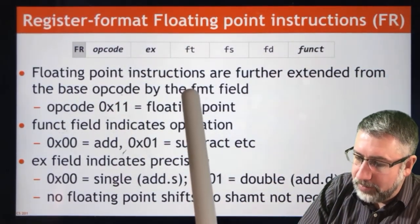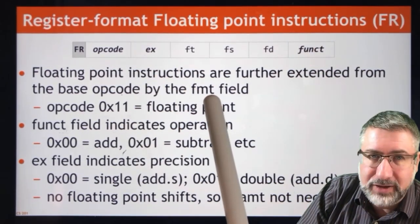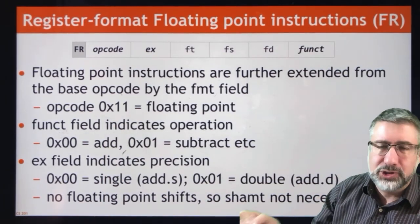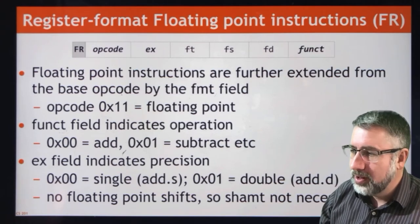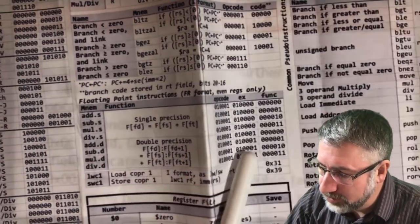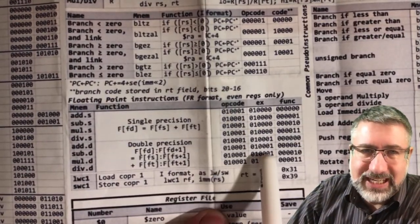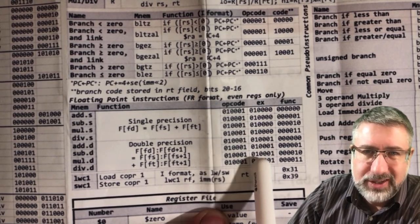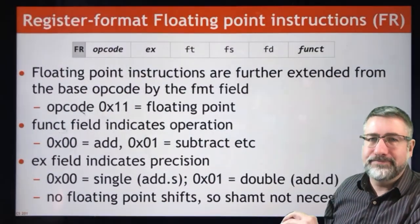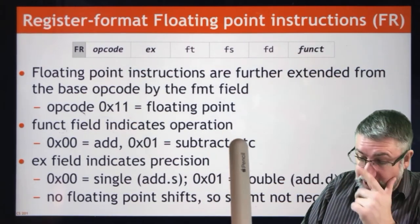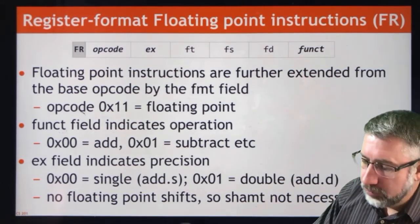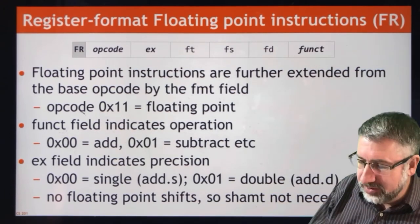The opcodes are further extended from the base opcode by what we call the EX field. The opcode for floating point numbers is 0x11 in hex, which is 010001 in six bits — that's the six bits that indicate a floating point opcode. The EX field says whether we're in single precision or double precision. It's a lot of bits to represent one piece of information, but there you go. The function field tells us whether we're adding, subtracting, multiplying, or dividing. There are no floating point shifts — it doesn't make sense to do a floating point shift — so there's no shift amount.